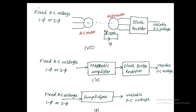The ninth one: from AC voltage, using a magnetic amplifier which supplies variable magnified electrical signals at its output, connected to a diode bridge rectifier to get variable DC voltage. The tenth one: from fixed AC voltage by using an amplityne, which also converts AC to DC, directly giving variable DC voltage from fixed AC voltage. All these are possible ways to get variable DC voltage from fixed AC voltage.